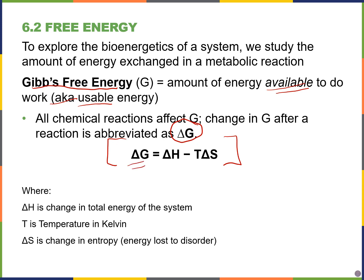The Gibbs free energy equation is: ΔG equals the total energy or enthalpy of the system (ΔH) minus the energy lost as heat or entropy (TΔS). So delta G is equal to the change in total energy of the system — enthalpy — minus temperature in Kelvin times the change in entropy, which represents disorder.